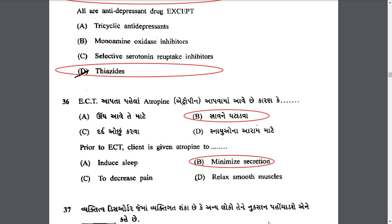Prior to ECT, the client is given atropine to minimize secretion. Atropine is an anticholinergic drug that reduces all secretions.